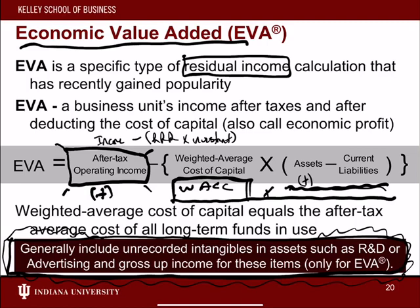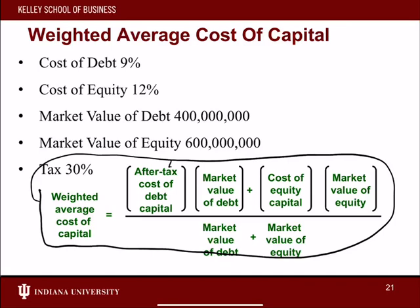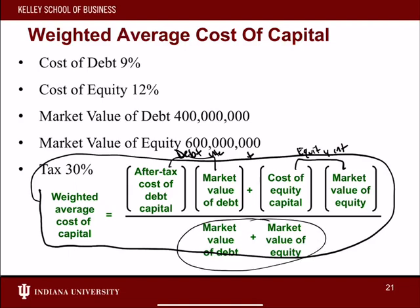As a refresher on WACC — weighted average cost of capital — the calculation is straightforward. It's your cost of debt times market value of debt, plus your cost of equity times market value of equity, all divided by total market value. Essentially, it's your total interest on debt and equity combined divided by total value, giving you your overall weighted average interest rate.